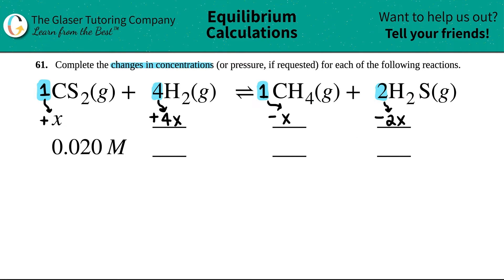Now we just have to figure out what those values are. Well, going by what we know, we know that the X value equals 0.020. So if the X value equals 0.020, I can find out what all these other ones are by just plugging in for X.